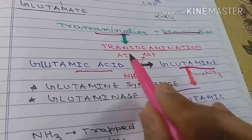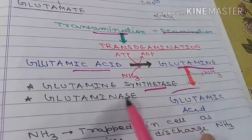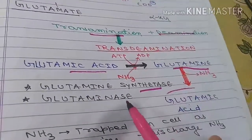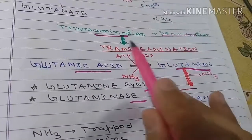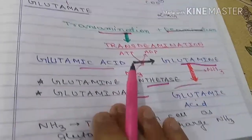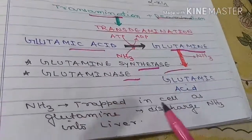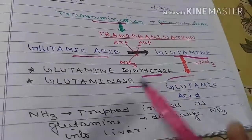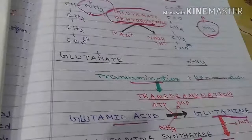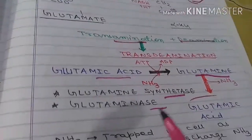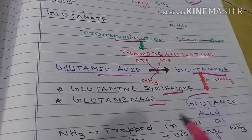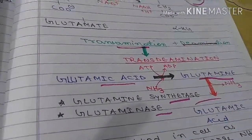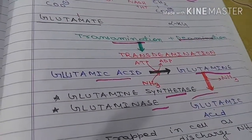The enzyme responsible for this reaction is glutamine synthetase, which utilizes ATP. Together, these two reactions — trans-deamination and ammonia trapping as glutamine — are the key mechanisms. Ammonia is trapped in cells as glutamine and discharged into the liver. This covers the basic reactions: transamination, trans-deamination, and how ammonia is trapped as glutamine.